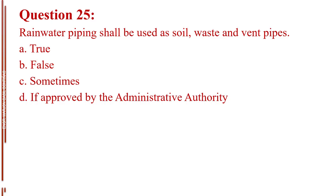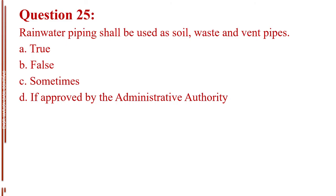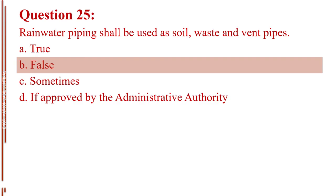Question number 25. Rainwater piping shall be used as soil, waste and vent pipes. Letter A, true. Letter B, false. Letter C, sometimes. Letter D, if approved by the administrative authority. The answer is Letter B, false.